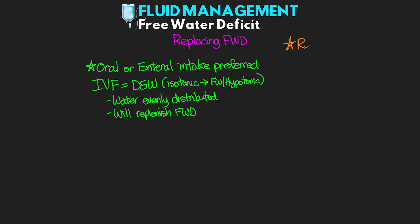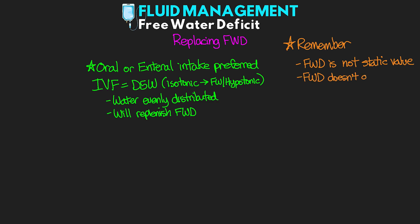Now, there are a couple things to remember with this. First is that the free water deficit is not a static value — this is truly only a moment in time. Right now, what is their deficit? And this value changes as time goes on. Really, to that last point, the free water deficit does not account for any ongoing losses. Urine, GI losses, and insensible losses are all going to need to be accounted for and then replaced in order to truly correct the patient's free water deficit. If we're only replacing what that calculated deficit is over time but they're continuing to lose water and we're not also replacing that, we're actually going to be chasing our tail.